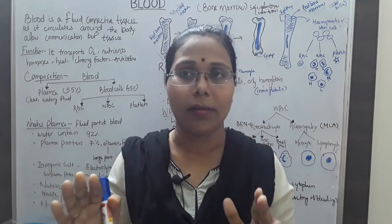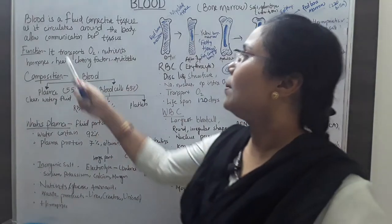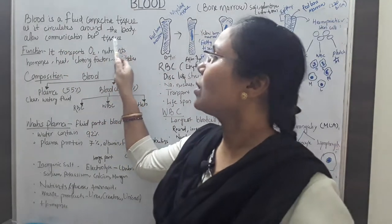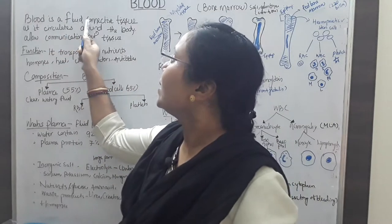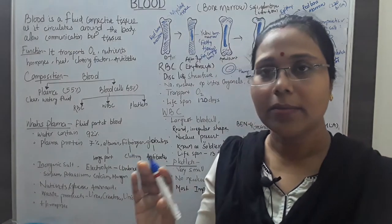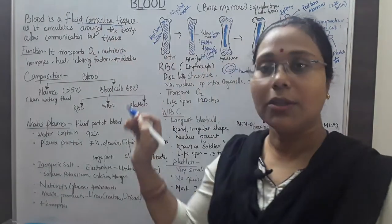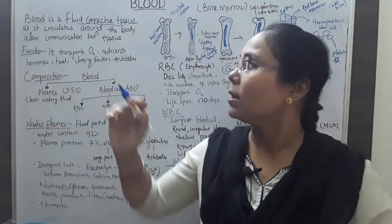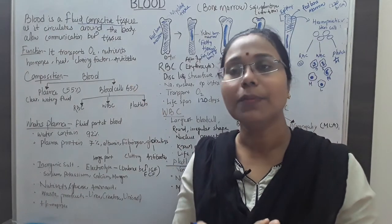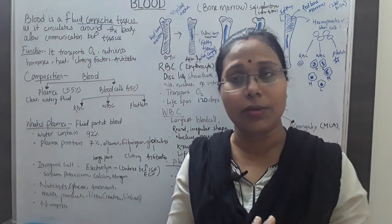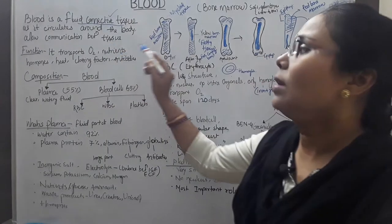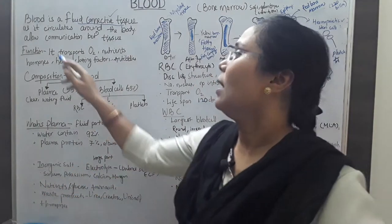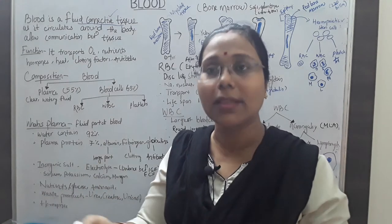Blood plays a major role in our body. The common definition is that blood is a fluid connective tissue, as it circulates around the body allowing communication between tissues. There are four types of tissue: nervous tissue, epithelial tissue, connective tissue, and muscular tissue. Blood comes under connective tissue and circulates throughout the body, from head to foot, through blood vessels.